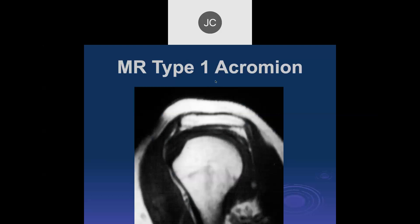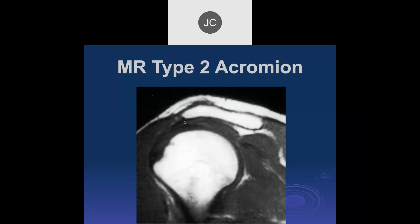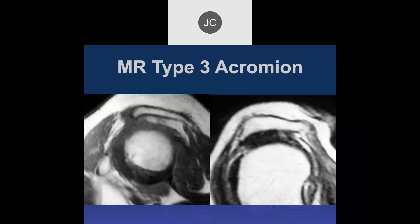The types of acromion were initially described by one of Charlie Neer's fellows, primarily using the outlet view on X-rays — though we can see something similar on MRI. A type 1 acromion in the oblique sagittal plane is flat. A type 2 shows a gentle curve, the most common kind. A type 3 has a hook on the anterior aspect of the acromion, which abruptly narrows the space between the acromion and humeral head, thought to produce bony mechanical irritation of the tendon leading to anterior supraspinatus tears.